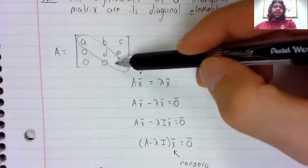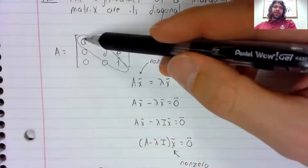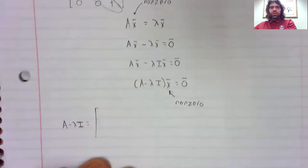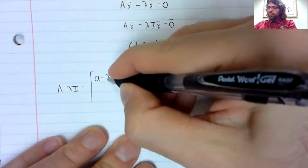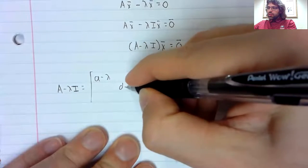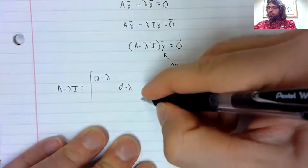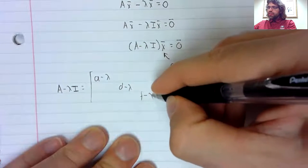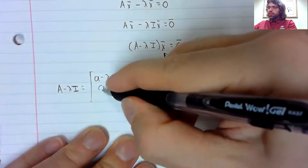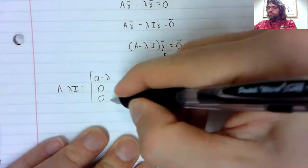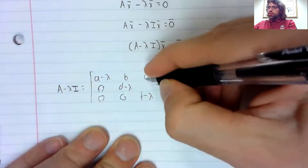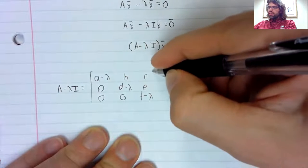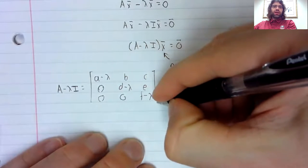Lambda I has lambdas down the diagonal. So A minus lambda I puts a minus lambda in each of these diagonal elements.